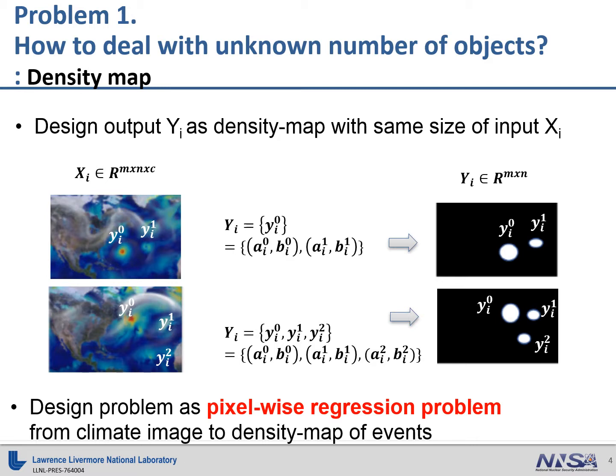Basically, input Xi is the climate image with multiple climate variables at time step i, and the output is the hurricane heat map with the same size as the input image. In this way, we design the multi-object tracking problem as a pixel-wise regression problem from input climate image to output density map of extreme events.